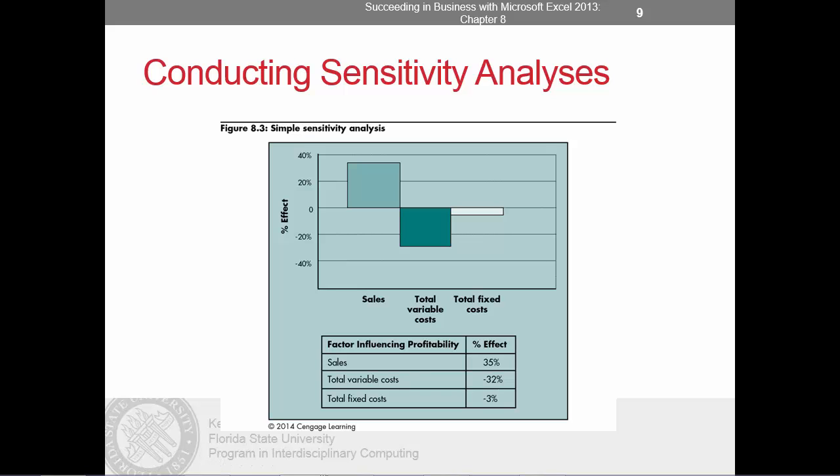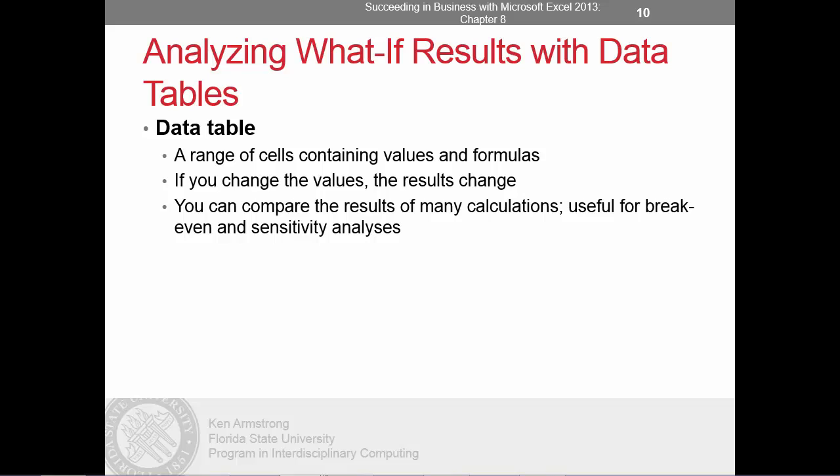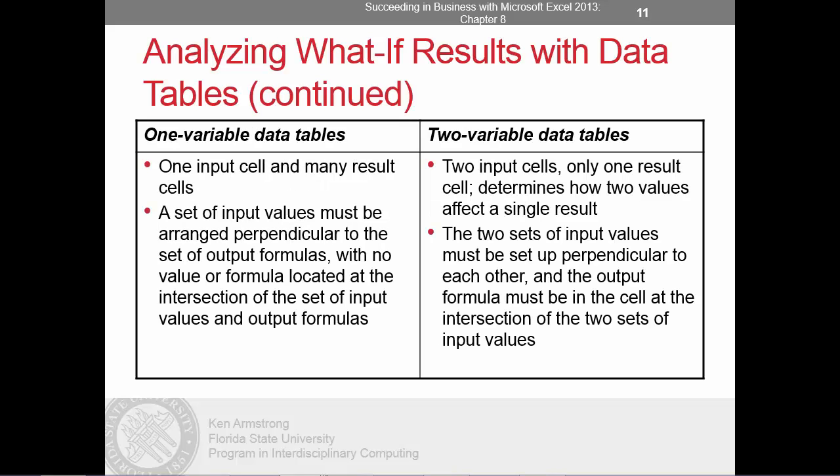Now that we know what our break-even and sensitivity analysis look like, let's introduce you to data tables. A data table is a range of cells containing values and formulas. When you change the value of an assumption, the data table shows you how that change affects the results from the formulas in your spreadsheet. Because you can compare results of many calculations, data tables are very useful for break-even or sensitivity analysis. Both types of data tables have input cells — cells containing values allowed to vary — and result cells, which contain formulas that involve the input cells in their calculations.